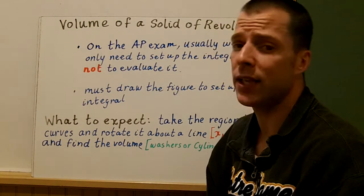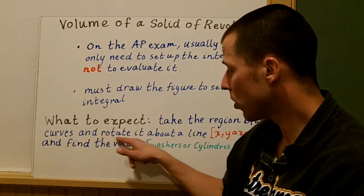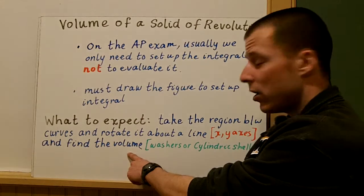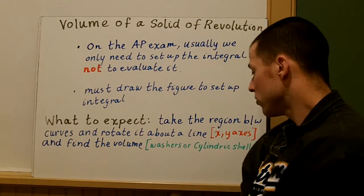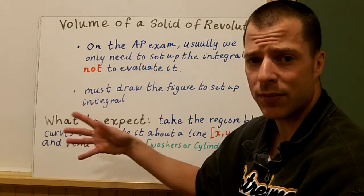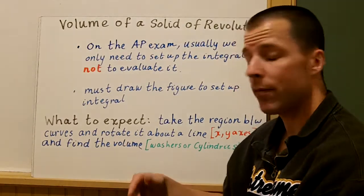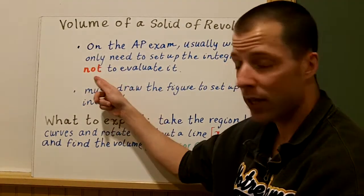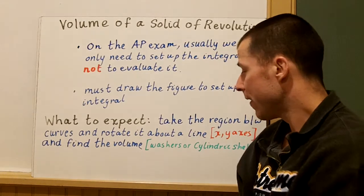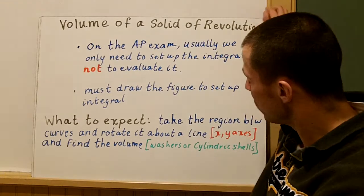In the next couple sections, you're going to take the region between curves, rotate it about a line — usually the x-axis or y-axis — and find that volume. There are two ways to do it: washers or cylindrical shells. We'll start with washers in the first two lectures and then get into cylindrical shells.